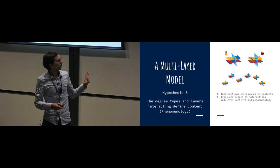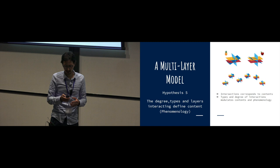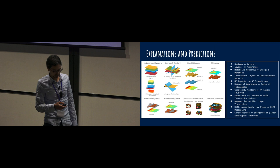Finally, the fifth hypothesis is that degree types, intersections, and numbers of layers interact and define the content of your experience. That's not so far off other theories, actually. But there are some differences.